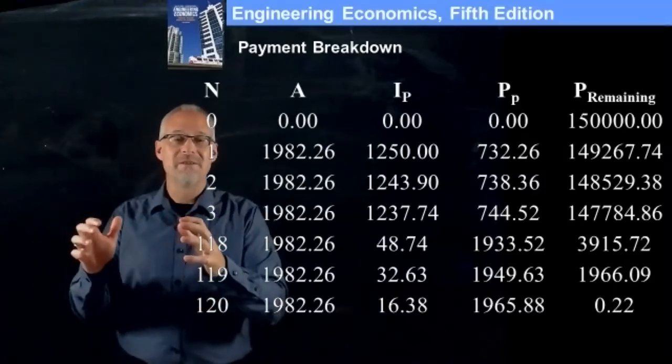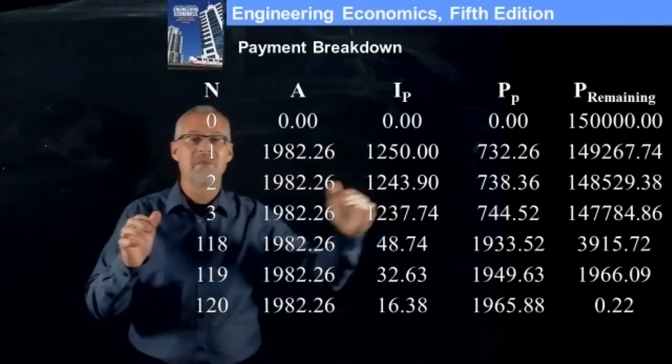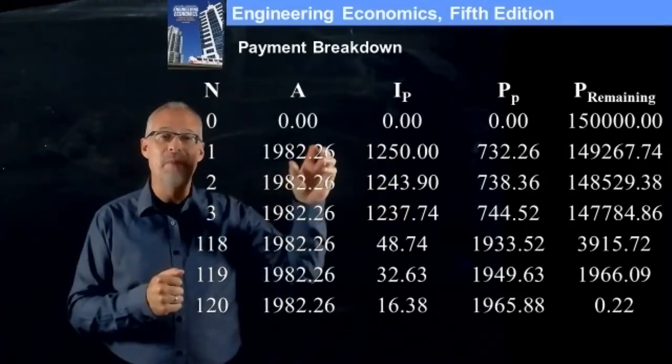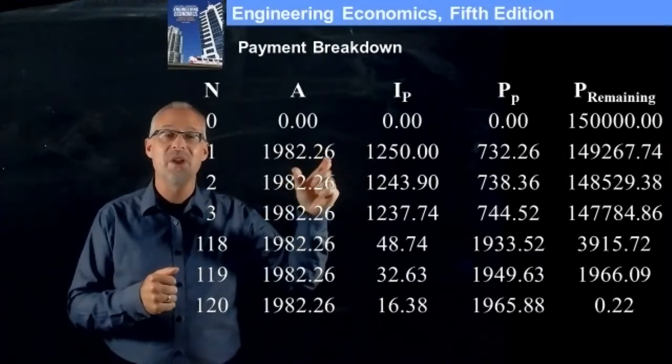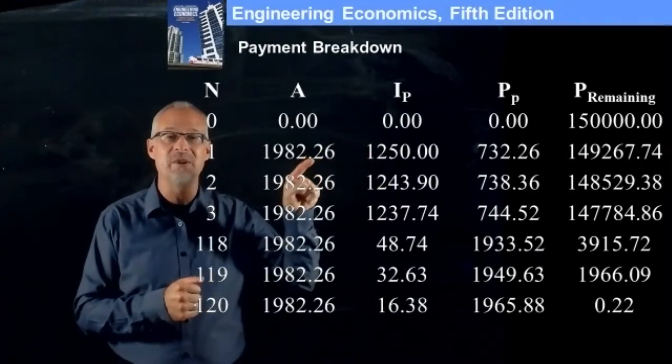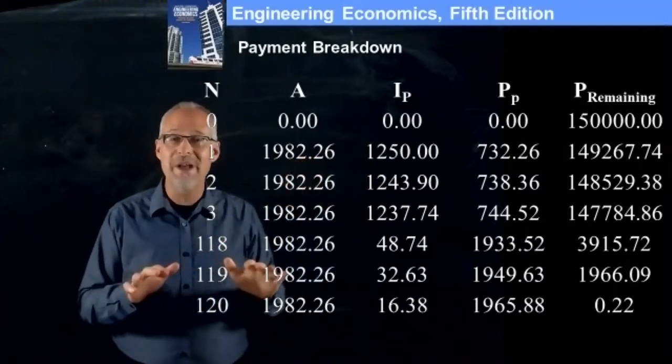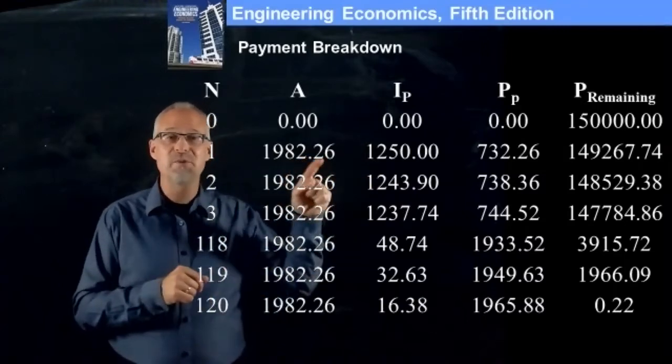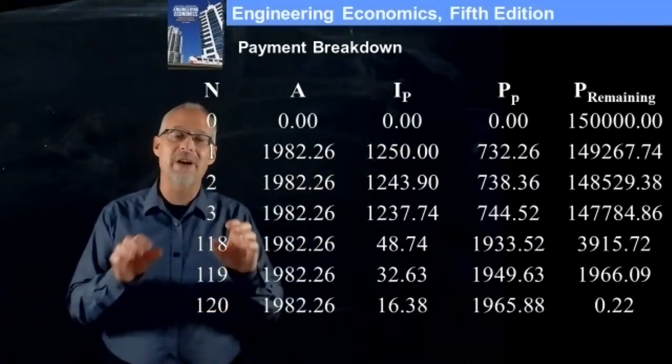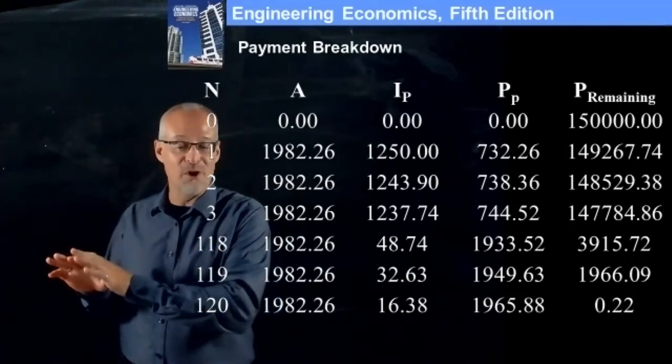So here's what's happening. You borrow money. Interest is being charged. And then you're also making payments. And what happens over the life of a loan or a mortgage is that when you make a payment near the beginning, you're mostly paying for interest. So what we're saying is the 1982.26, that payment that you make, $1,250 of the 1982 is just paying interest. The difference between 1982 and $1,250 is 732 and 732 is the amount that actually goes towards paying down the $150,000 that you borrowed.